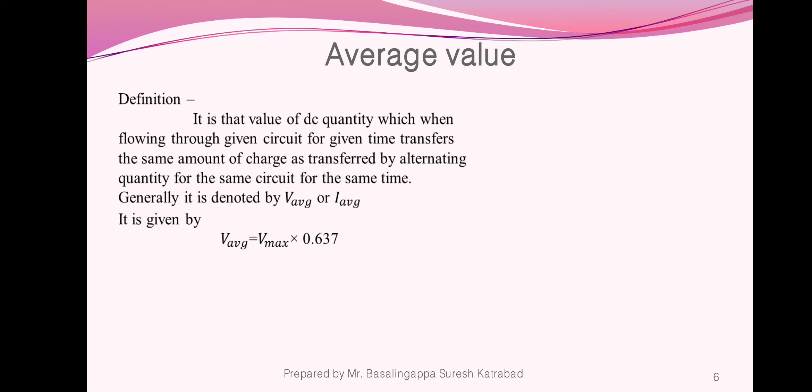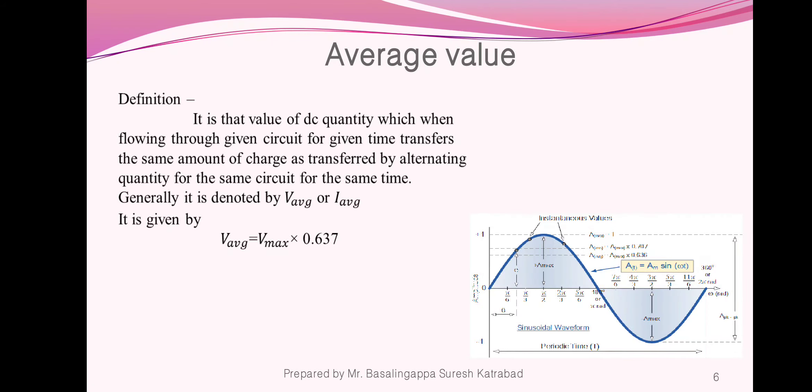Here, we take a capacitor and give it an AC supply — charge will be transferred. Whatever charge is transferred by the AC quantity, we want to transfer the same amount of charge by giving DC supply. Whatever current or voltage is required to transfer the same amount of charge as produced by the alternating quantity is known as the average value. We are showing the average value in the graph.